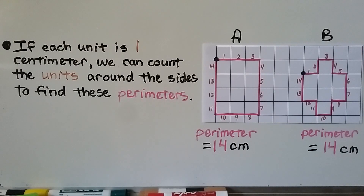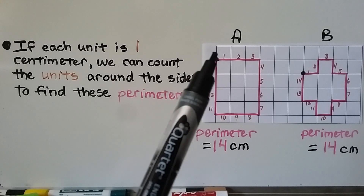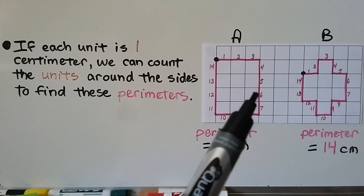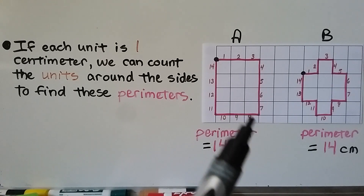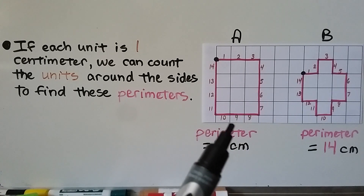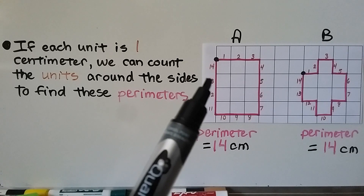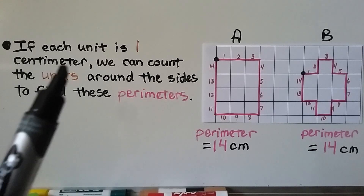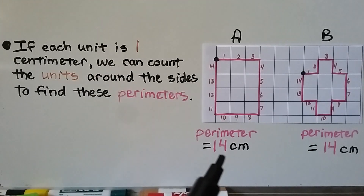If each unit is 1 centimeter, we can count the units around the sides to find these perimeters. Starting up here in the corner and going: 1, 2, 3, 4, 5, 6, 7, 8, 9, 10, 11, 12, 13, 14. The perimeter, because each unit is 1 centimeter, is 14 centimeters.